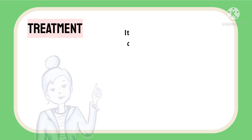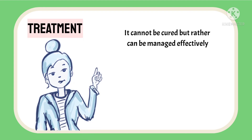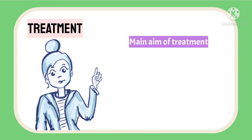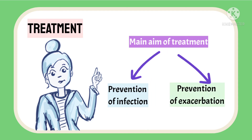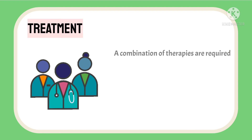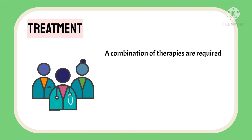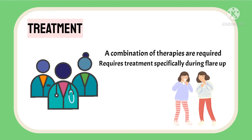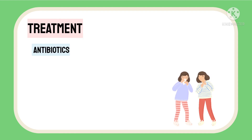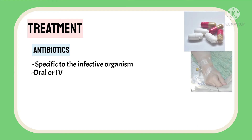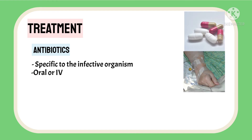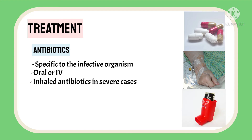Bronchiectasis cannot be cured but can be managed effectively. The main aim of treatment involves prevention of infections and exacerbations, requiring a combination of therapies. The patient usually requires treatment during flare-ups and will be started on antibiotics specific to the infective organism. Oral or IV antibiotics are prescribed depending on severity, while inhaled antibiotics may be used in severe cases. Macrolides, a type of antibiotic with anti-inflammatory properties, may be prescribed in severe conditions. Long-term antibiotics may be prescribed in cases of three or more infections per year.